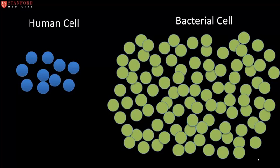Also of importance is the consideration that the effect of antibiotic administration extends beyond the individual patient and the target pathogen, and that antibiotics affect the general bacterial ecology of the patient and the patient's environment. It must be recognized that there are ten times as many bacterial cells as there are human cells in and on the patient, and that this entire varied and massive bacterial burden is exposed to the administered antibiotic, not just the target pathogen.